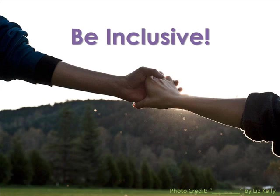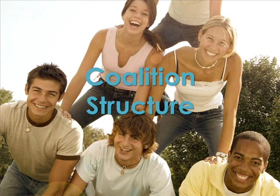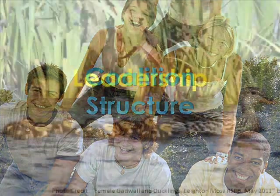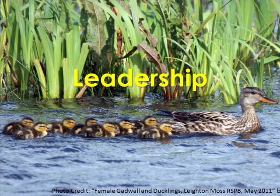Now we have identified all of the people that we need to be at the table. Now it's time to think about how we should organize them within our coalition. Let's first consider our leadership structure. Strong leadership can make or break our coalition because they not only guide the actions of the coalition, but they also help to engage and inspire our membership to carry out our coalition's goals. Our leadership structure should be clearly defined so that everyone involved knows whom to approach for what.